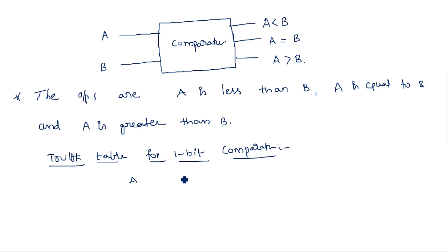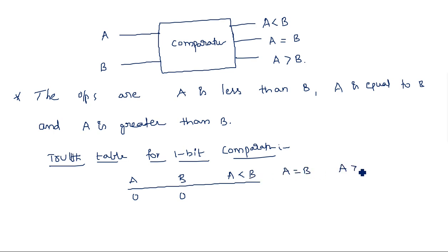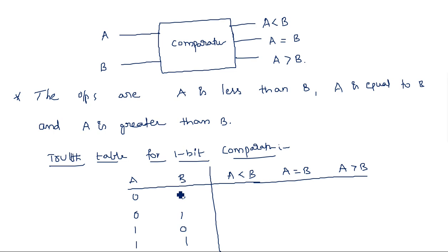A is one bit and B is another bit. We consider the four combinations: 00, 01, 10, and 11. The outputs are A less than B, A equal to B, and A greater than B. When A equals 0 and B equals 0, both are equal, so the equality condition gives active high and the remaining two outputs are low.